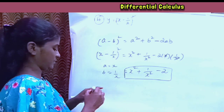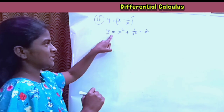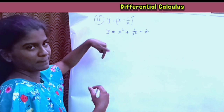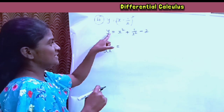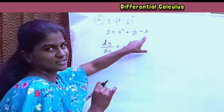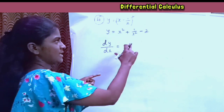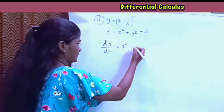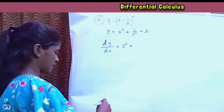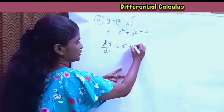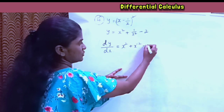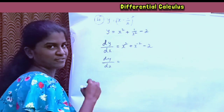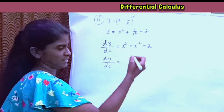Now we differentiate y. Y is equal to x square plus 1 by x square minus 2. We rewrite 1 by x square as x to the power of minus 2. Now differentiating: dy divided by dx, applying the formula x power n gives n into x power n minus 1.